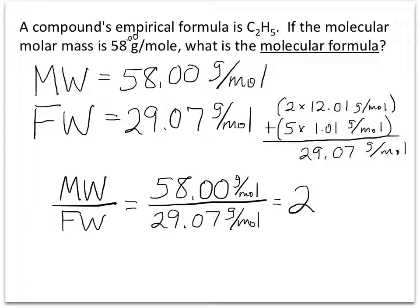Next, we'll take the empirical formula of C2H5 and multiply all the subscripts times 2 to get our molecular formula. Therefore, our molecular formula is C4H10.